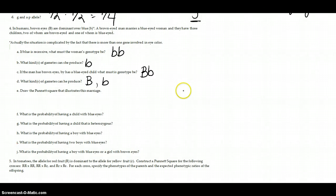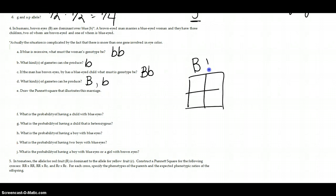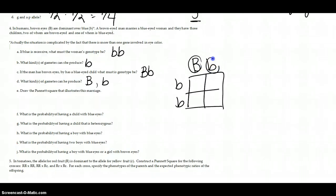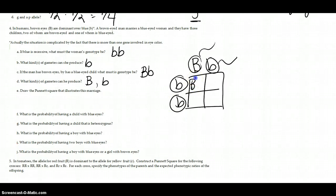Let's set up the Punnett square. Dad is across the top, mom is on the side. Each box in the Punnett square represents a possible gamete combination — a sperm and an egg. Each combination represents unique gametes.